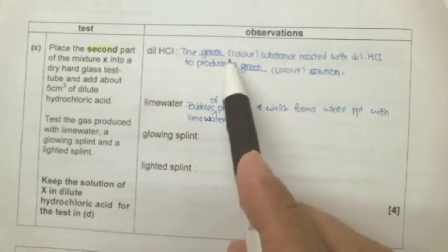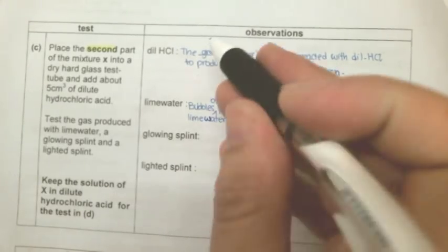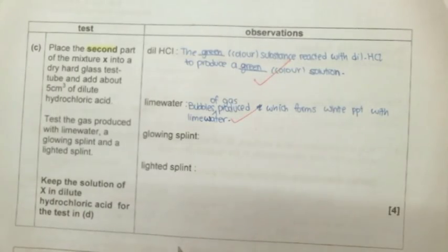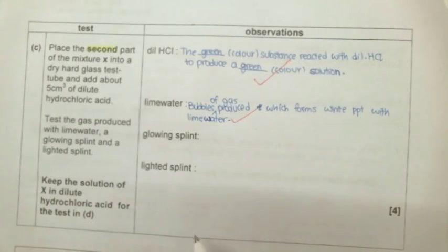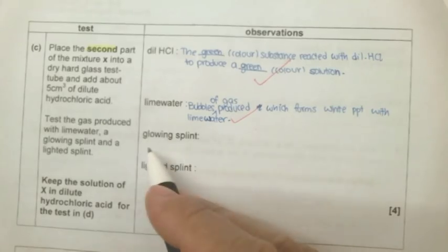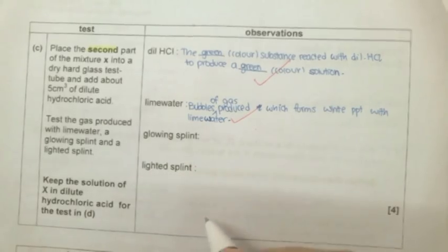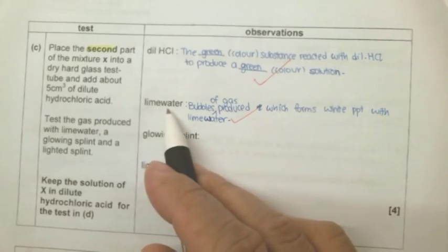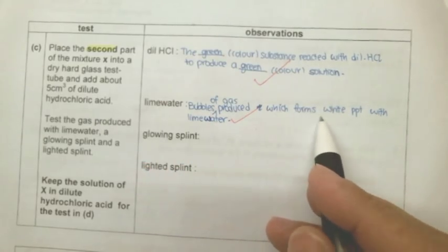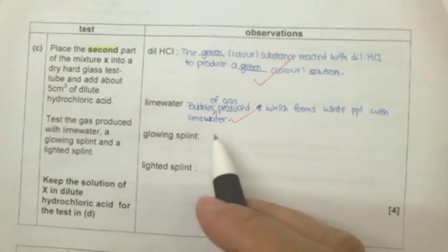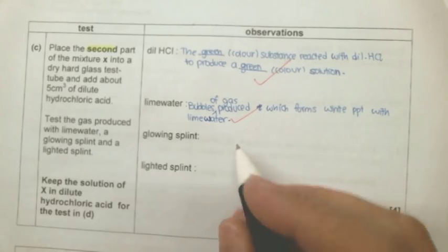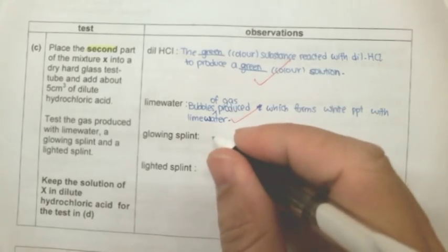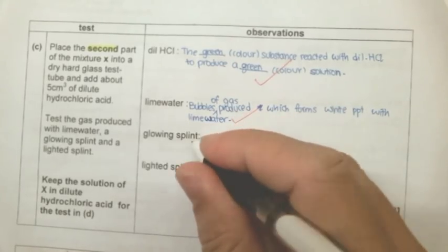So we should write something like that in bubbles of gas together with the observation. So we have, which is correct, which is correct. Now we can choose to ignore doing the glowing splint or lighted splint because this gas here turns lime water milky or forms white PPT with lime water. So that shows that it is carbon dioxide. So carbon dioxide will not support combustion.